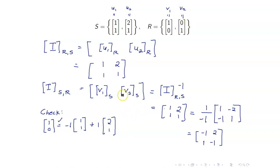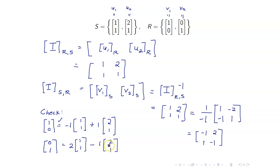Next, the coordinate vector of V2=[0,1] with respect to S is [2, −1]. Let us check: 2 times [1,1] plus −1 times [2,1] gives [2−2, 2−1] = [0, 1]. Correct. So this example shows that if we want the transition matrix from one basis to another and it's easier to compute the other direction, we simply get that transition matrix and take its inverse.